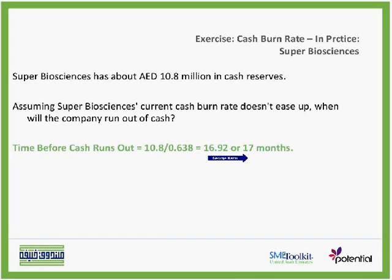So SuperBioSanx can accommodate 17 months of spending $638,000 per month in cash before going bankrupt. This is taken into consideration that they keep on burning at this rate and didn't generate any revenue to compensate for this cash burn rate.